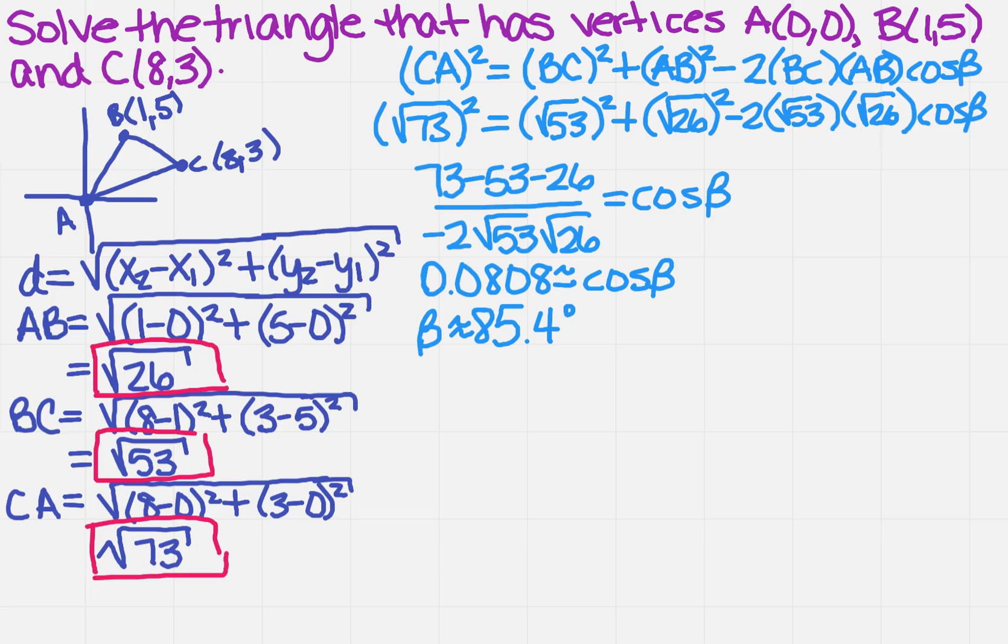Welcome back. So I've written out the formula for the law of cosines. Now remember, we're looking for the angle beta because the longest side was CA or AC. And so opposite from that is beta. So I worked everything out, and I got that beta is approximately 85.4 degrees. So again, this is something that's really important, so I want to go ahead and put my pink box around it.